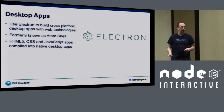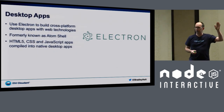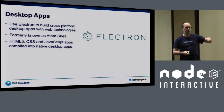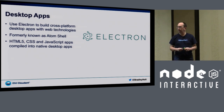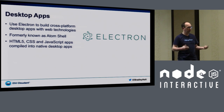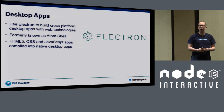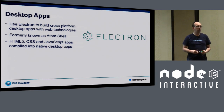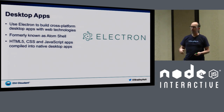For desktop apps, there's Electron — formerly called Atom Shell — which is pretty popular. You can build desktop apps with Node.js tooling using HTML5, CSS, and JavaScript. PouchDB runs in Electron as well, so you can use it as the database there too.